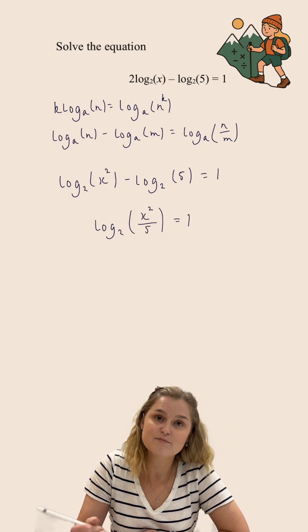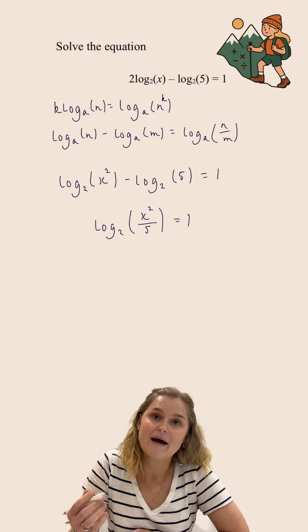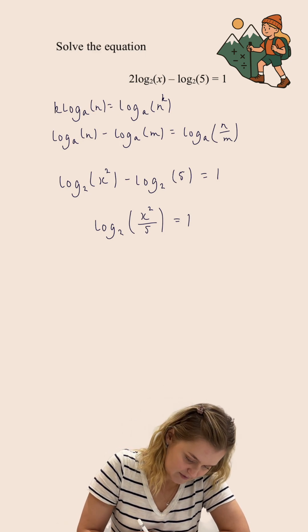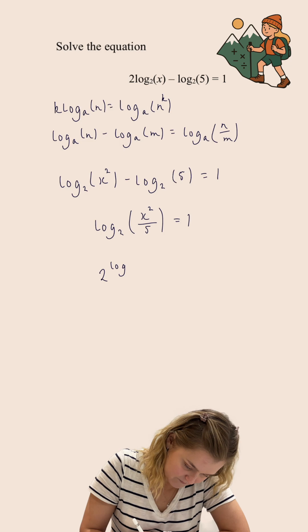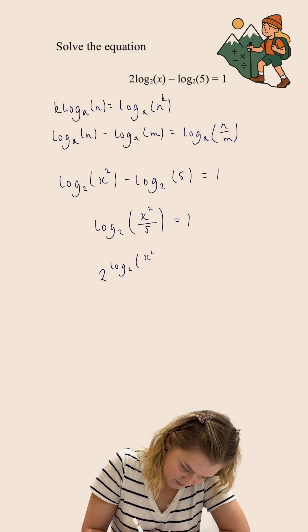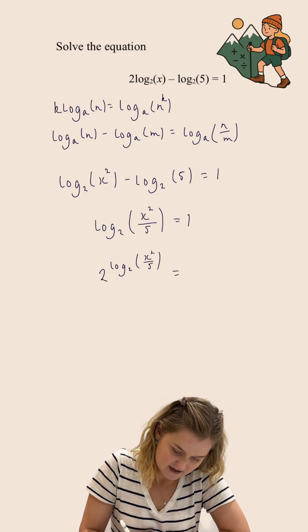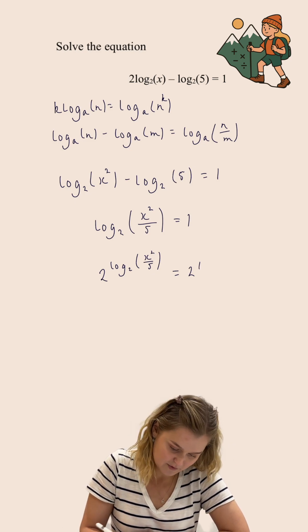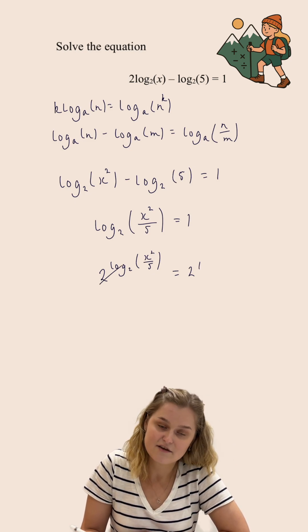Now at this point, I'm going to raise both sides to 2 to the power. And the reason I'm doing that is because 2 to the power of log₂(x²/5) are inverses of each other. And so what I'm actually going to end up with here is these cancelling each other out.